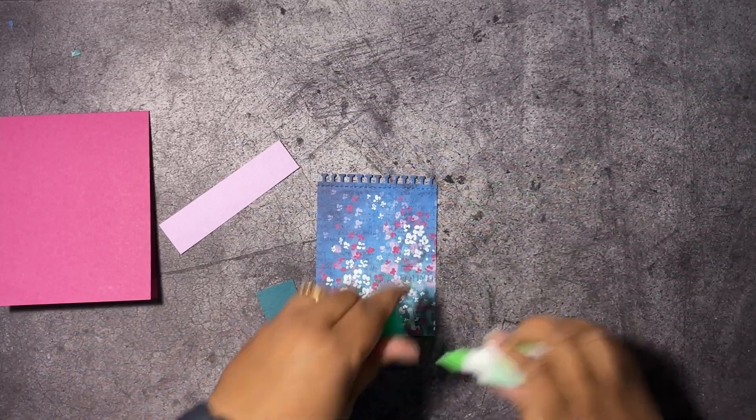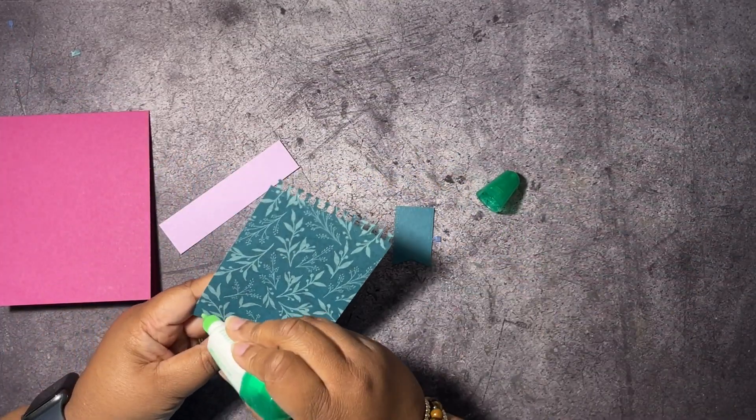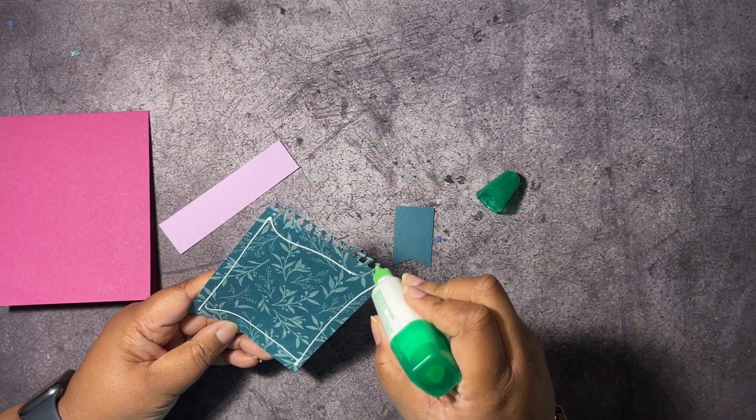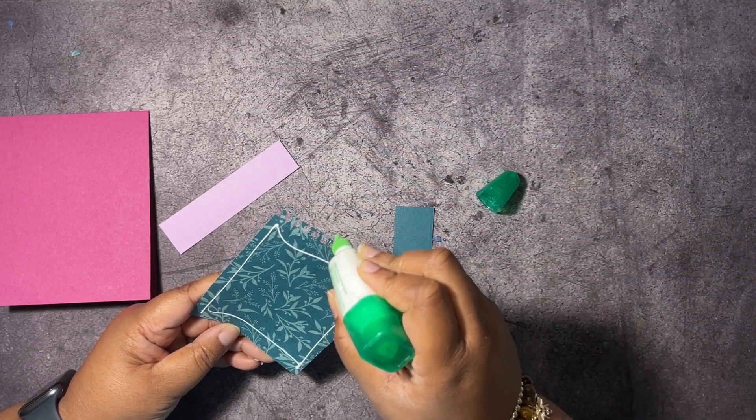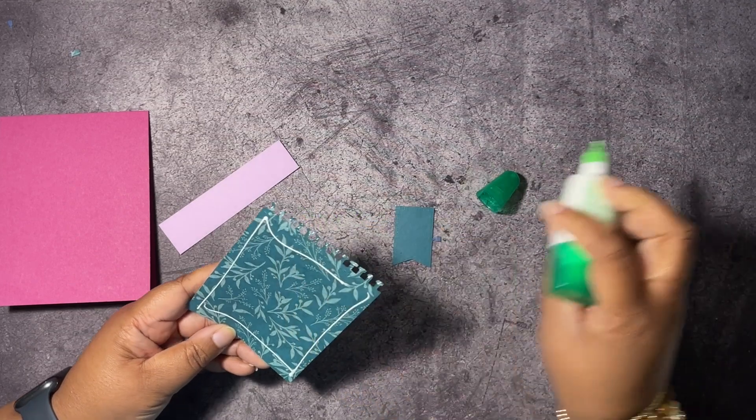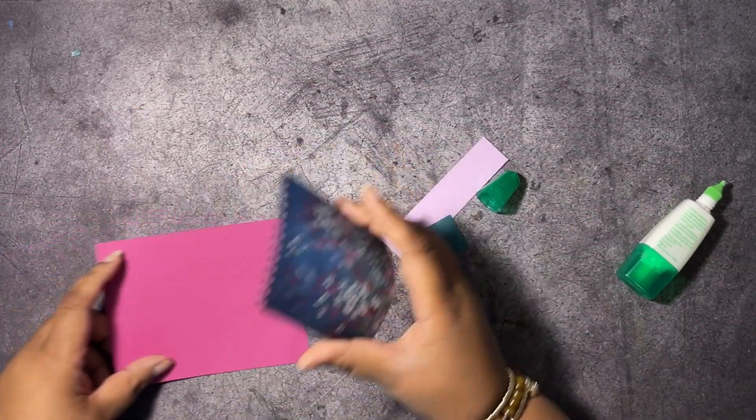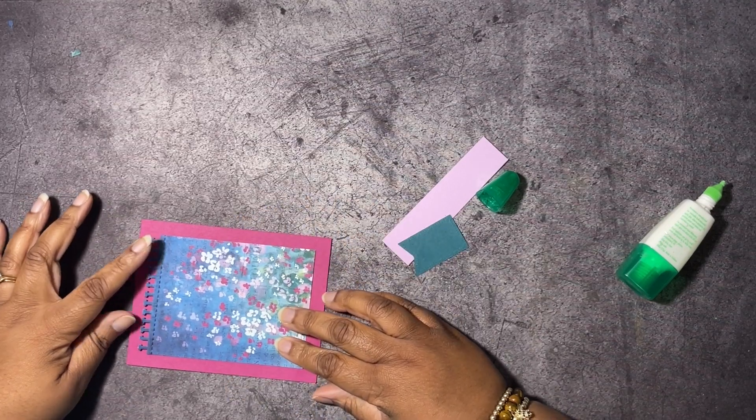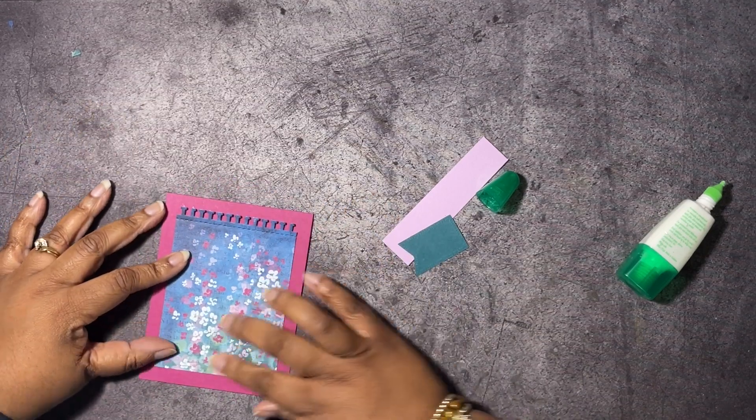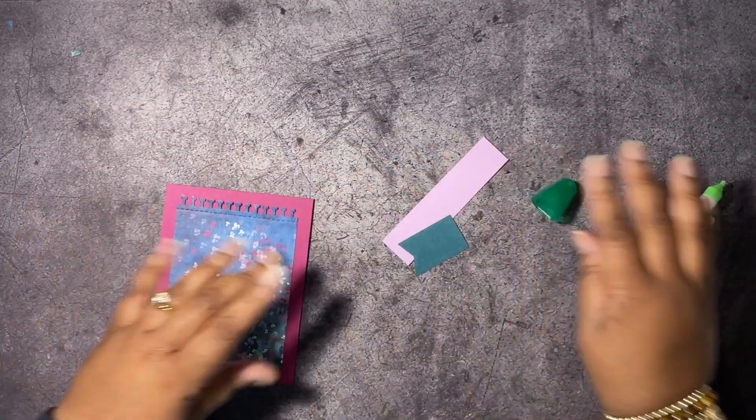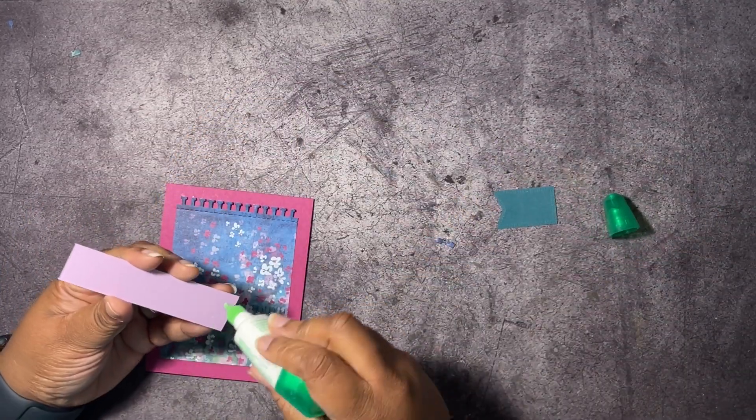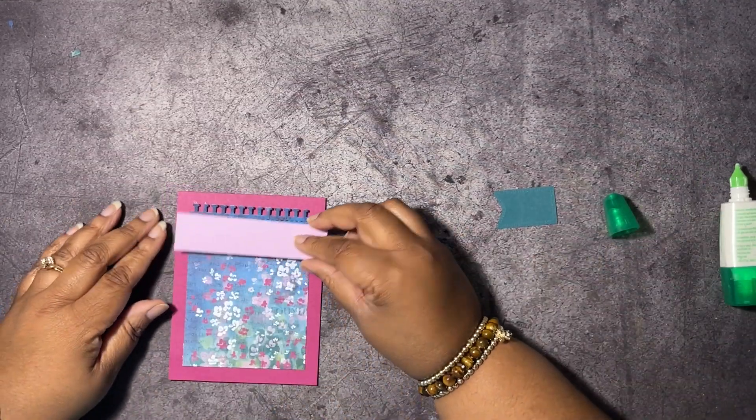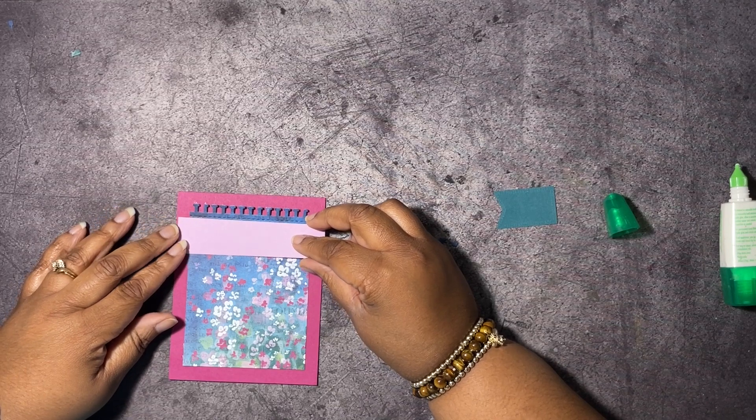We're going to add this on to our card base with some liquid glue here. I just want to put a little dab on these little tabs up at the top. We're just going to try to center this on our card base. Get it straight just like that. Then we're going to take this Fresh Freesia piece, we're going to lay it across right up under the stitching, just like that.